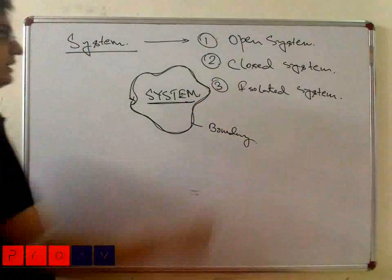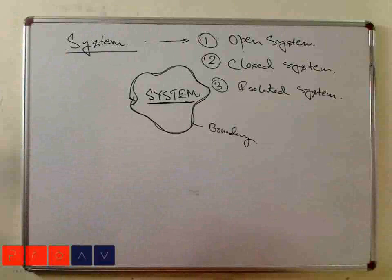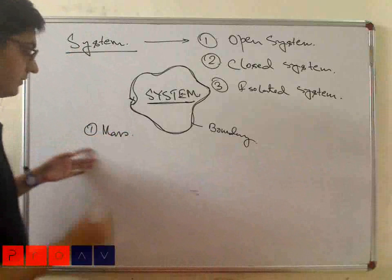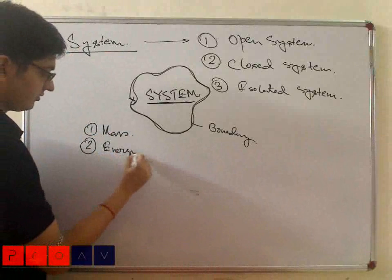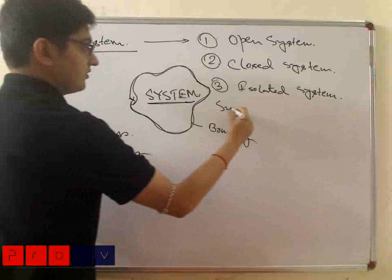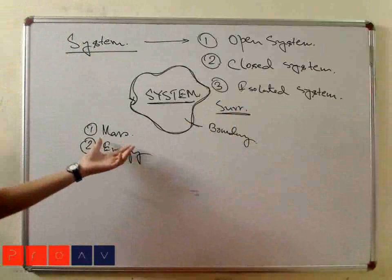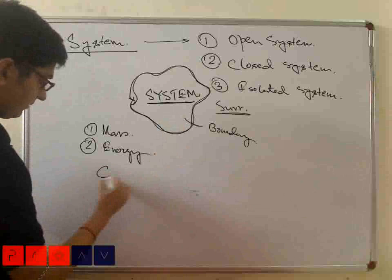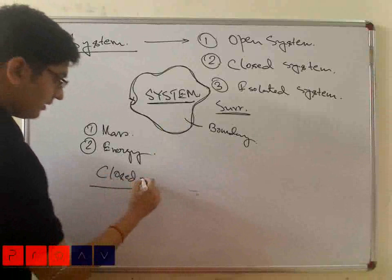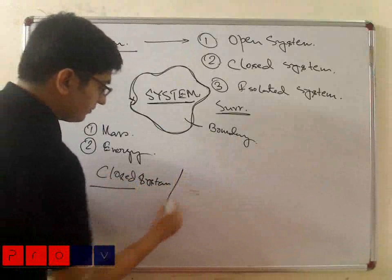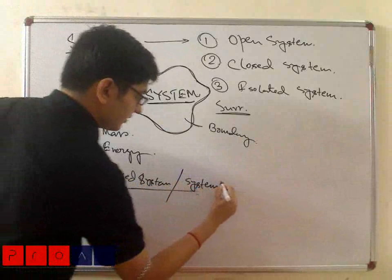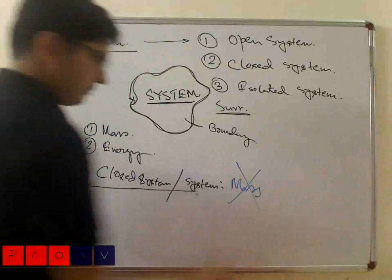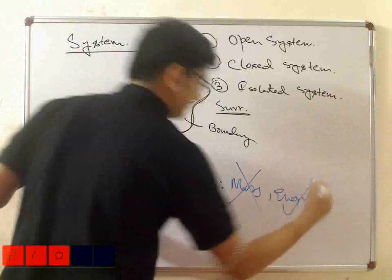Depending on the type of boundary, it is either an open system, closed system, or isolated system. In between system and surroundings, two quantities can transfer — one is mass, the second is energy. In a closed system, mass cannot transfer but energy can be transferred.